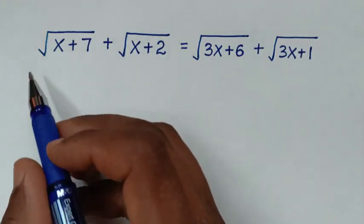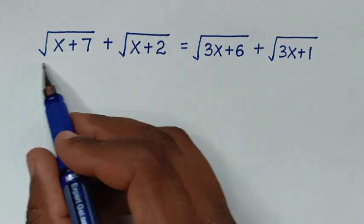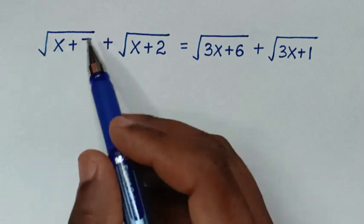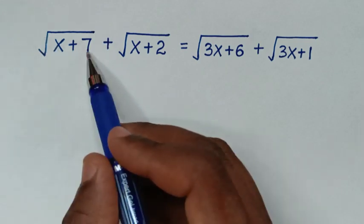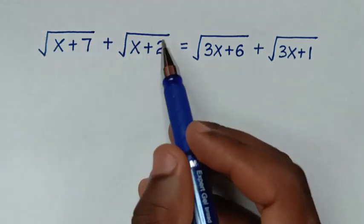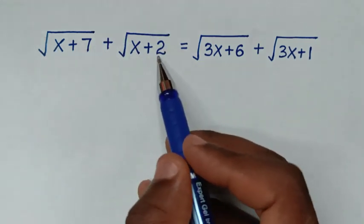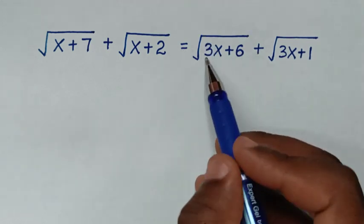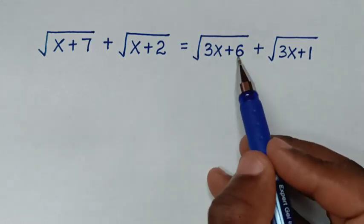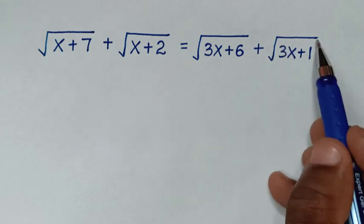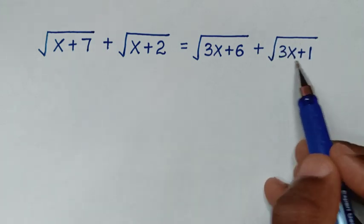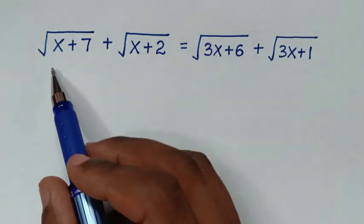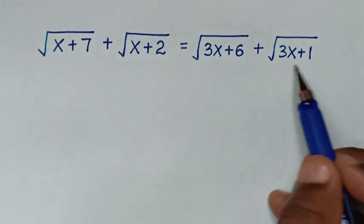Hello, you are welcome to solve this math problem: square root of x plus 7, plus square root of x plus 2, is equal to square root of 3x plus 6, plus square root of 3x plus 1. We need to find the value of x from this equation.